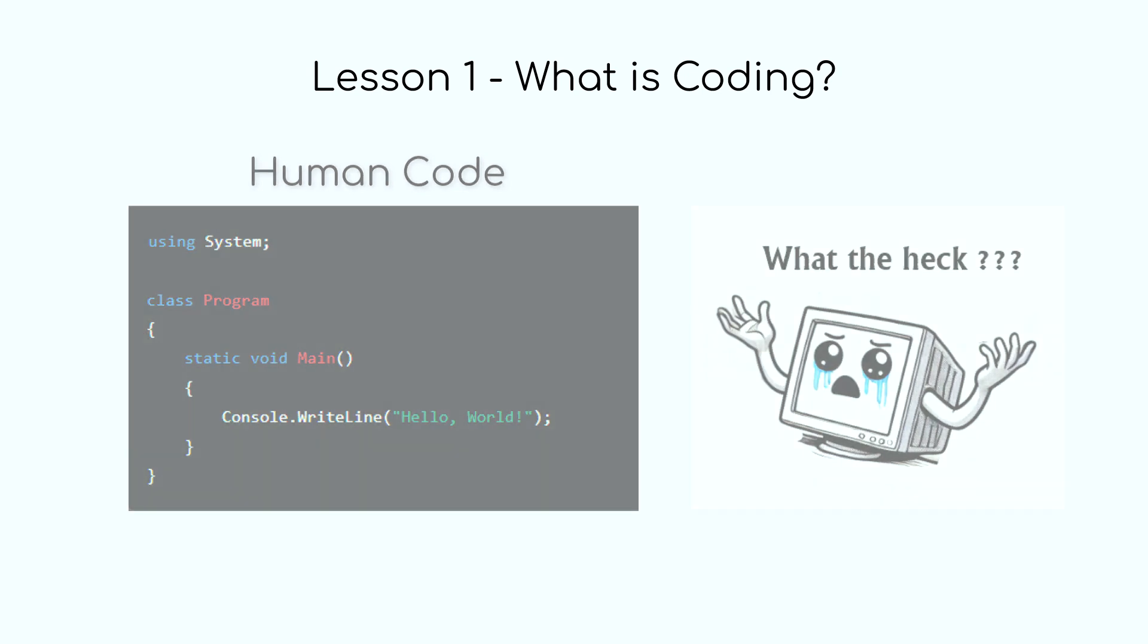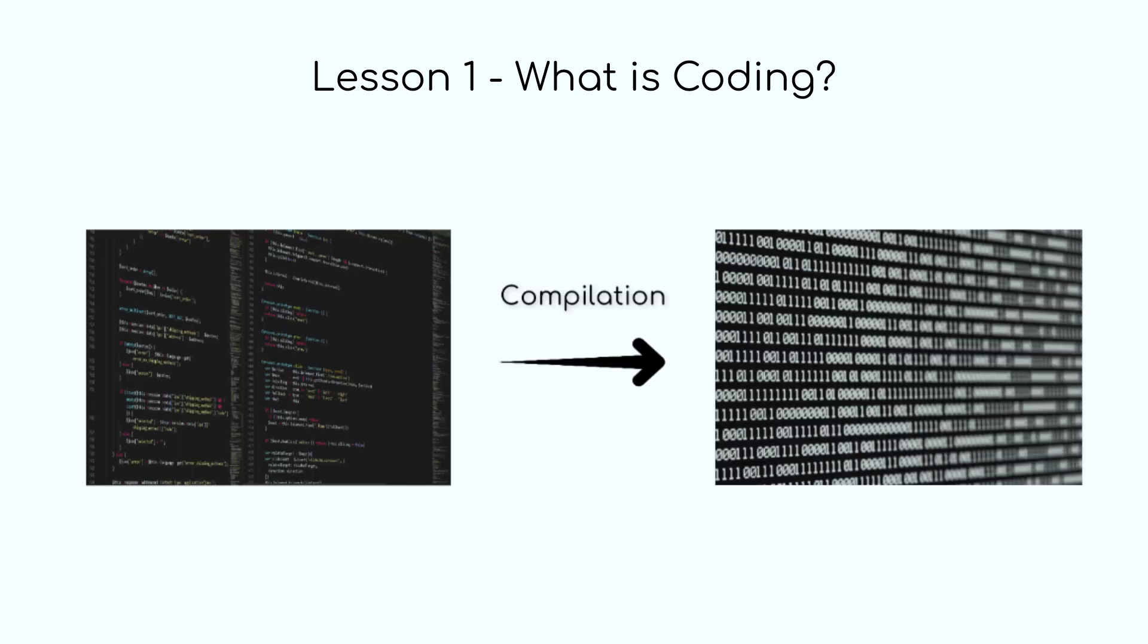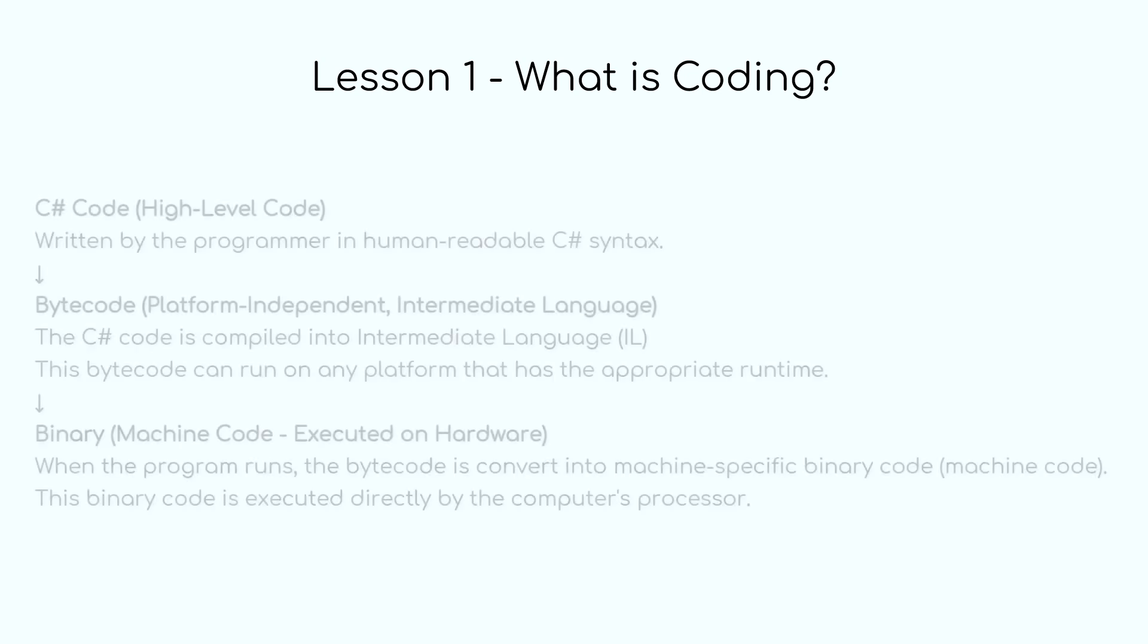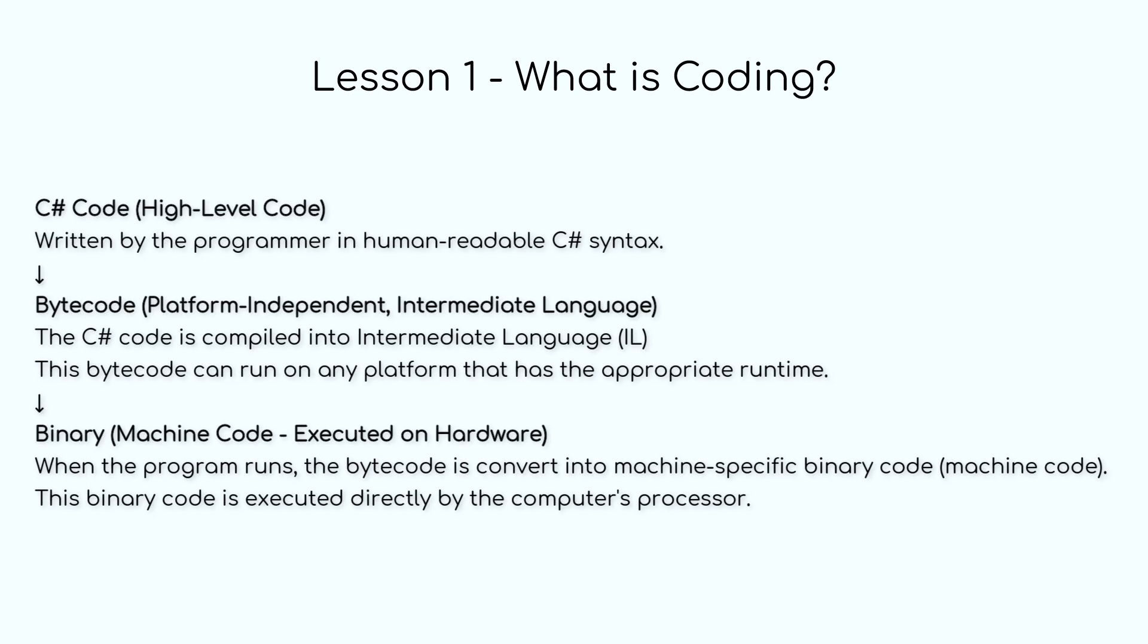This is where compilers come in. A compiler is a tool that takes the entire code you've written and translates it into binary or machine code. After compilation, the computer can run the program directly, and this is how most programs are built. The compiler essentially decodes or translates your human instructions and turns them into something that the computer can understand and act upon: ones and zeros.